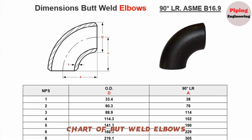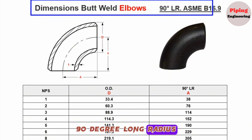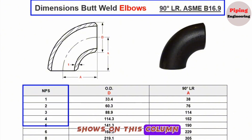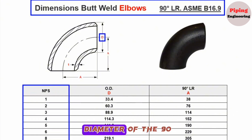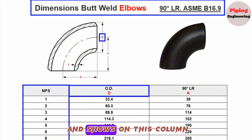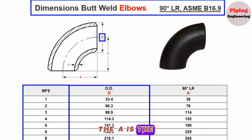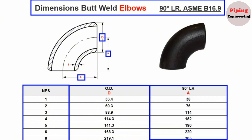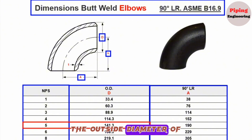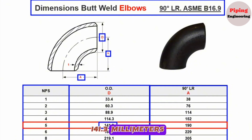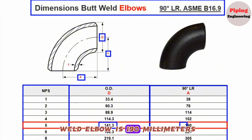Now let's look at the dimensions chart of butt weld elbows 90-degree long radius. NPS is the nominal pipe size, D is the outside diameter, and A is the center-to-end dimension of the 90-degree long radius butt weld elbow. Since the pipeline is 5 inch, we look at that row. The outside diameter of the 5-inch 90-degree butt weld elbow is 141.3 mm. The center-to-end of the 5-inch 90-degree long radius butt weld elbow is 190 mm.